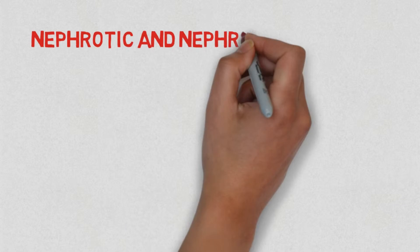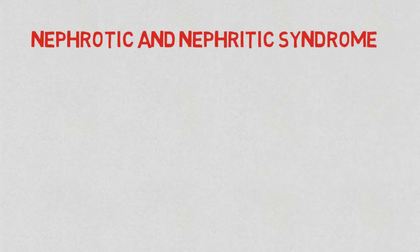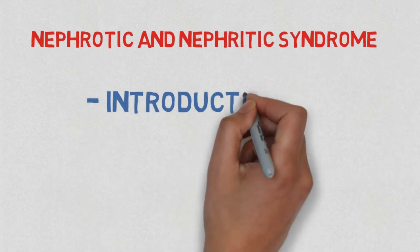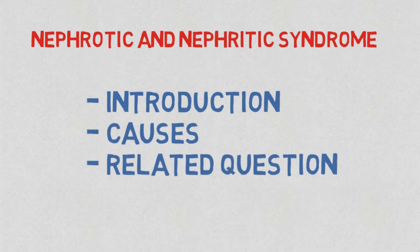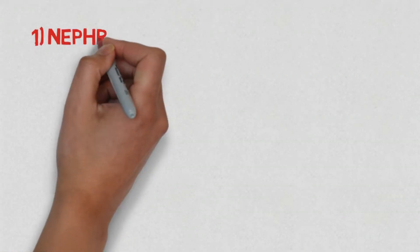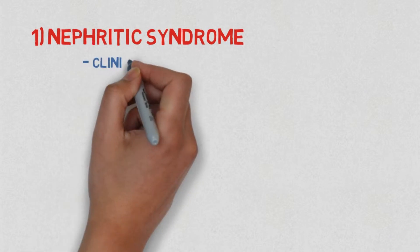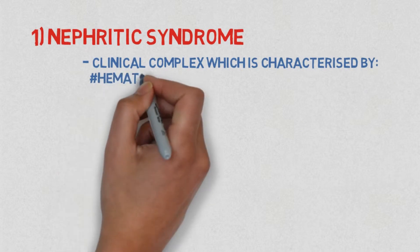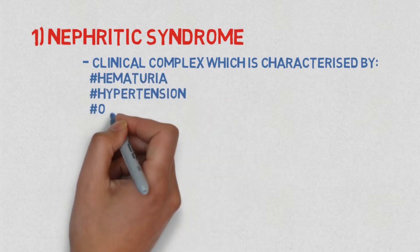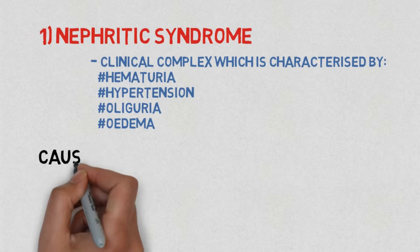In this entire video we will only be discussing the introduction, causes, and related exam questions for nephrotic and nephritic syndrome. Let's begin. Number one: nephritic syndrome. Nephritic syndrome is a clinical complex characterized by hematuria, hypertension, oliguria, and edema.